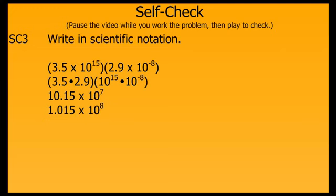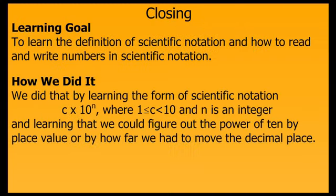In closing, let's review our learning goal. We wanted to learn the definition of scientific notation and how to read and write numbers in scientific notation. We did that by learning the form: c times 10 to the n, where c is between 1 and 10 and n is an integer. We can figure out how to write it by counting the number of places we need to move the decimal, and in which direction — which determines whether it is a positive or negative exponent — or by thinking about place value.